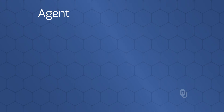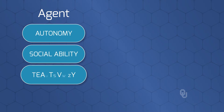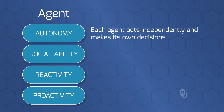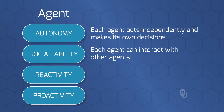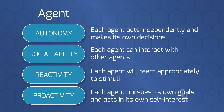Generally, an agent has four features: autonomy, social ability, reactivity, and proactivity. With autonomy, each agent acts independently and makes its own decisions. With social ability, each agent can interact with other agents. In reactivity, each agent will react appropriately to different stimuli. And with proactivity, each agent pursues its own goals and acts in its own self-interest.